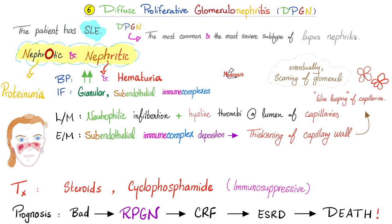Let's review the first nephrotic-nephritic condition: diffuse proliferative glomerulonephritis. Don't forget its association with lupus. Don't forget the wire looping of the capillaries. The immune complex deposition is subendothelial, and these deposits are granular — not linear. Linear would be Goodpasture syndrome.